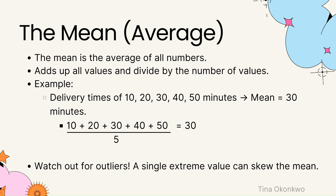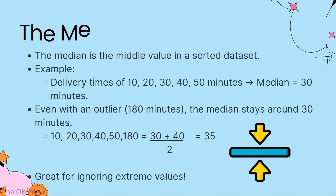So the average delivery time is 30 minutes. But what if one delivery took three hours — that's 180 minutes? Suddenly your average jumps to something much higher, like 58 minutes, and it doesn't represent most of your deliveries anymore. That's the downside of the mean: it can be skewed by extreme values, or what we call outliers.